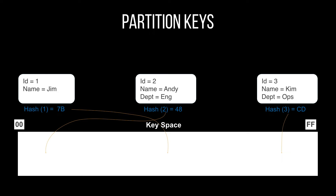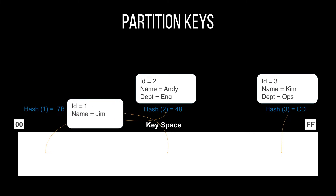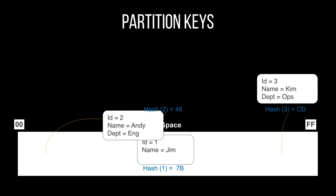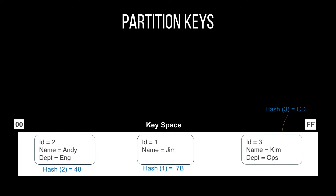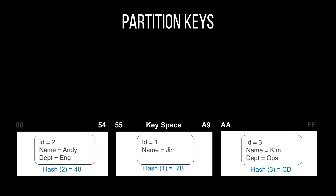Let's go into partition keys in more detail and look at how Dynamo physically stores items. Partition keys are used to identify items but also to distribute items across the key space so that not all items are in the same partition, making fetches more efficient. Dynamo hashes the partition key and orders items according to that hash, then splits the key space into different partitions. This depends on how big your database is — a very big database will have many partitions, a smaller one will have fewer.